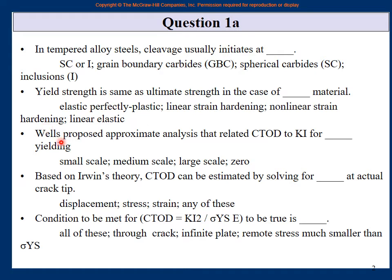Number three: Wells proposed approximate analysis that related CTOD to K1 for what yielding? Small scale, medium scale, large scale, or zero? At the crack tip there is some yielding. If you go back to the Wells theory, it was for small scale yielding. For medium scale and large scale, there is too much plastic work and the basics cannot do anything. Zero yielding means it is perfectly brittle, so Wells theory is not required. It was required for small scale yielding.